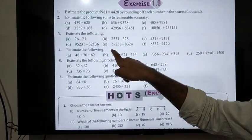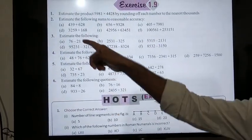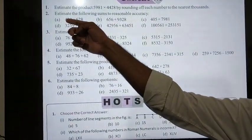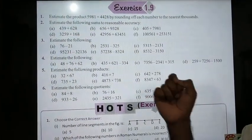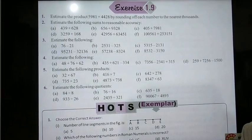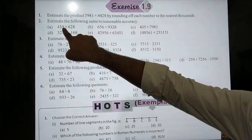Question number 2: Estimate the following sum to reasonable accuracy. You will round off to nearest hundred. 439 becomes 400, and 628 becomes 600, because 28 is less than 50.